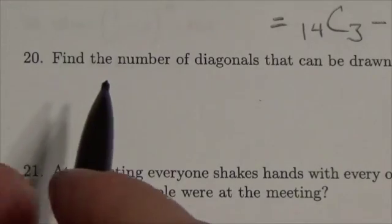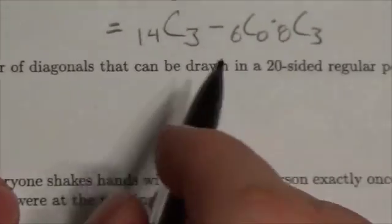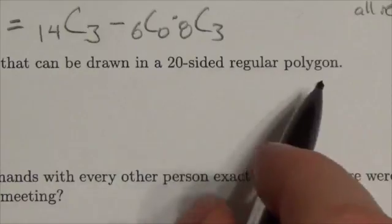Hi everyone, so this question here says find the number of diagonals that can be drawn in a 20-sided regular polygon.